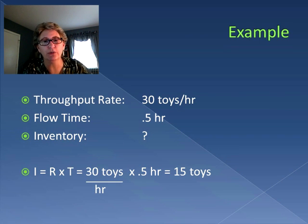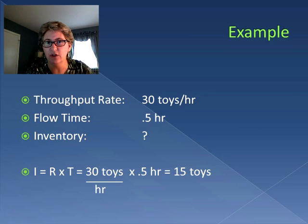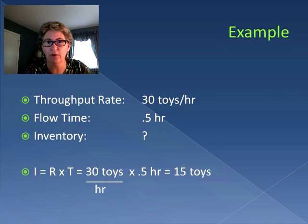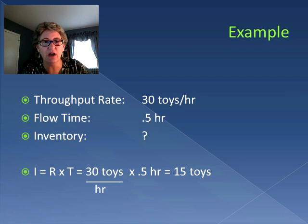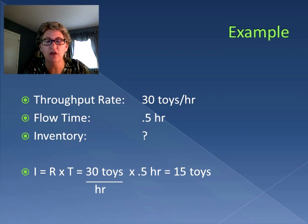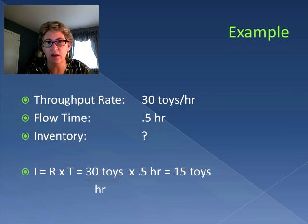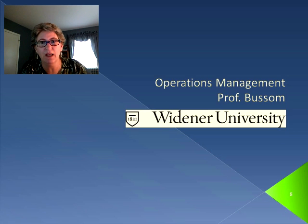The key is to identify the values for each variable. The throughput rate was 30 toys per hour, so R = 30 toys/hr. The flow time was half an hour, so T = 0.5 hr. To calculate inventory, we use Little's Law: I = R x T = 30 toys/hr x 0.5 hr = 15 toys. That's all it takes - understanding the relationship I = R x T. Next time we'll do more complicated problems using Little's Law.